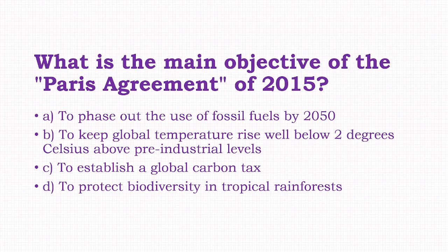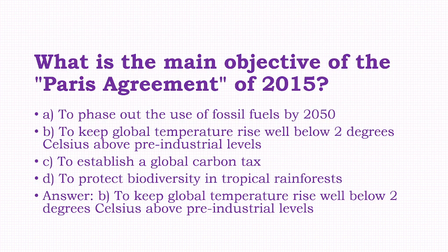What is the main objective of the Paris Agreement of 2015? Options: to phase out the use of fossil fuels by 2050, to keep global temperature rise well below 2 degrees Celsius above pre-industrial levels. The answer is option B, that is to keep global temperature rise well below 2 degrees Celsius above pre-industrial levels.